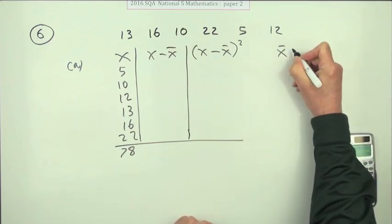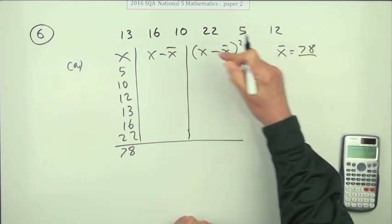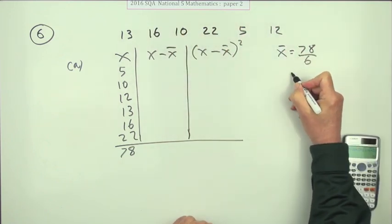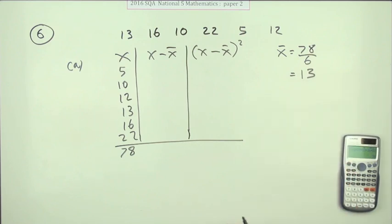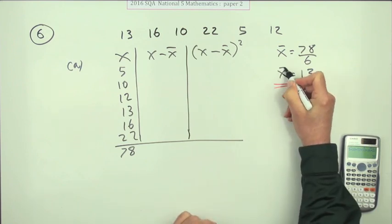State the mean then. So the mean will be 78 divided by six. Six into 78 goes 13, or you could have used your calculator. The mean is 13.